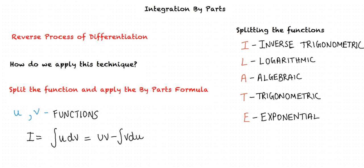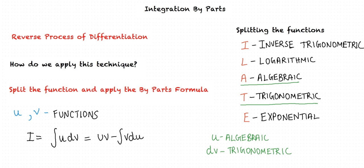For example, if we are required to evaluate the integral of a function which is a product of an algebraic function and a trigonometric function, since we give priority to the algebraic function, we set the algebraic function equal to u and the trigonometric function equal to dv. So the first step is to select the u function and the dv function.